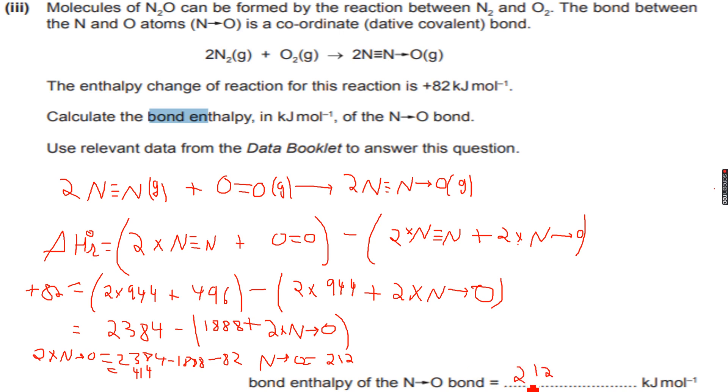Now remember, bond enthalpies are always positive. You don't have to include the sign. Bond enthalpies are always positive because bond breaking is always endothermic and bond forming is exothermic. Bond energy is the energy needed to break a bond and hence it is always endothermic, so always positive.